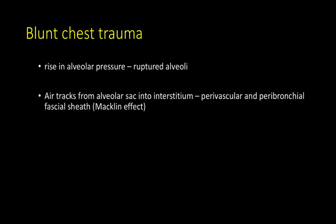In blunt chest trauma, there is a sudden rise in intra-alveolar pressure which leads to ruptured alveoli. Air tracks from the alveolar sac into the interstitium, then into the perivascular and peribronchial fascial sheath, and this is known as the Macklin effect.